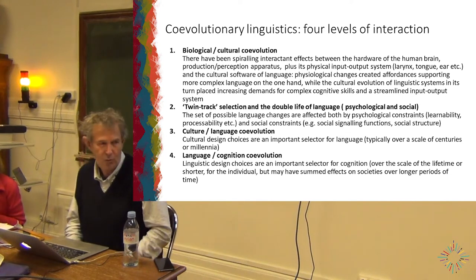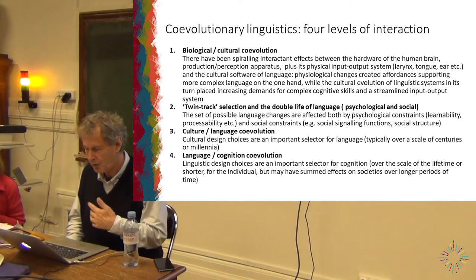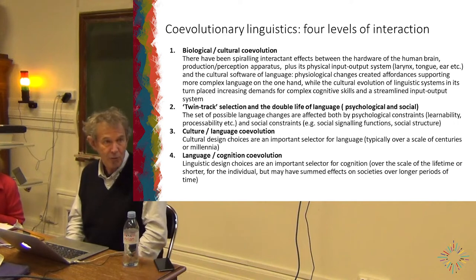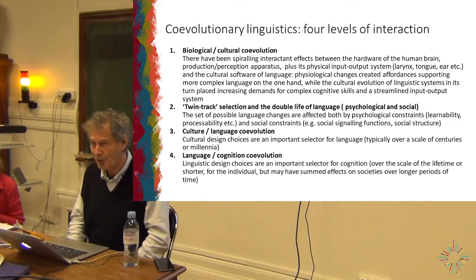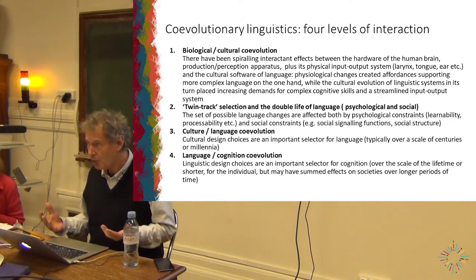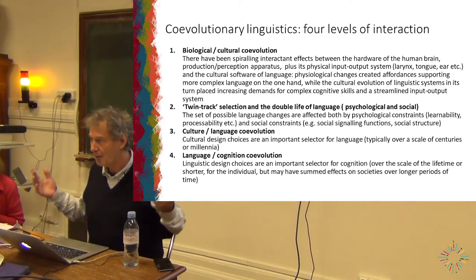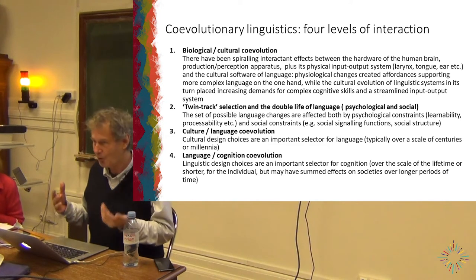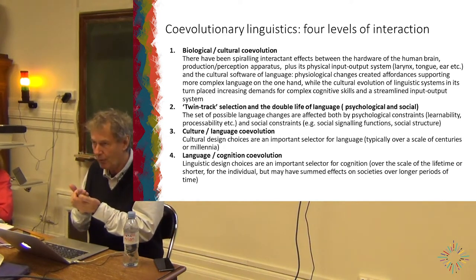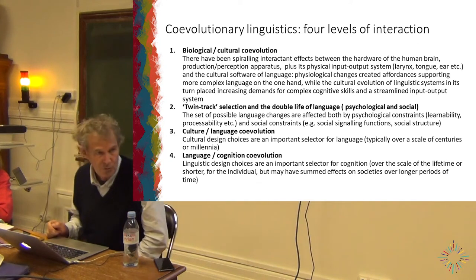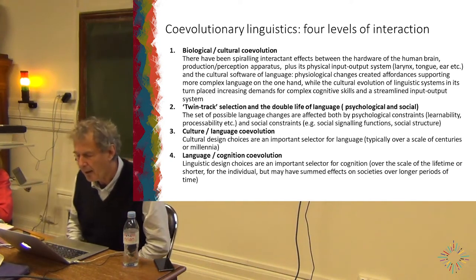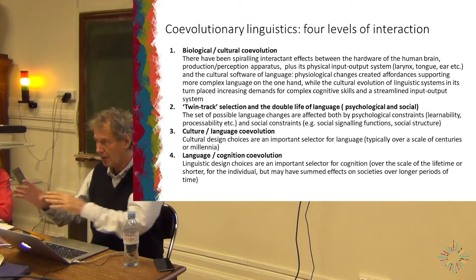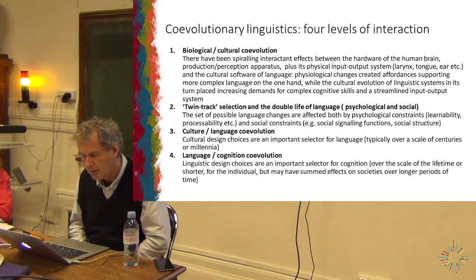Then there's another sort of twin-track selection that we can call the double life of language. Language is at the same time a psychological thing — I could be the last speaker of a language; at that point it's no longer a social institution, it's just there in the mind of that individual. But it's also a social institution that is shared. Changes in one part of those tracks can affect the other part in a rather complex way.